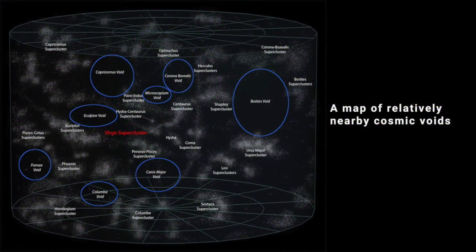Galaxy clusters and superclusters tend to be concentrated where walls meet and intersect. Voids are the vast, bubble-like regions between cosmic walls and filaments.